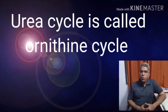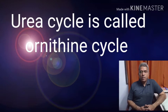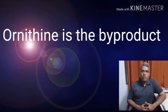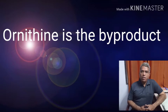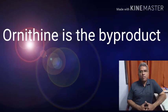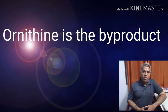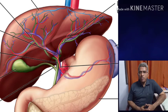Liver synthesizes urea. The chemical cycle taking place in the liver where urea is synthesized is called the ornithine cycle. Ornithine is a by-product of this cycle, and the ornithine cycle was worked out by Krebs and Hanselit.